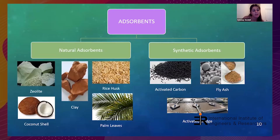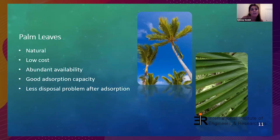There are two kinds of adsorbents: natural adsorbents, for example blue leaf, clay, rice husk, coconut shell, and palm leaves; and synthetic adsorbents, for example activated carbon, fly ash, and activated sludge. The adsorbent used in this study is palm leaves. Palm leaves are natural, low cost, and have good availability. There are fewer disposal problems after adsorption and they have good adsorption capacity.